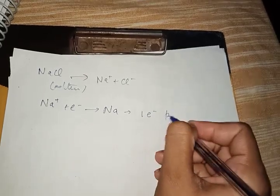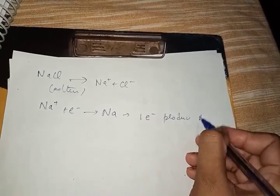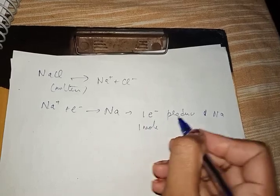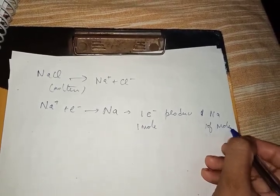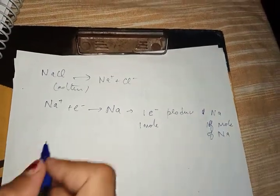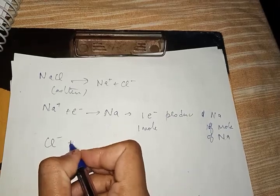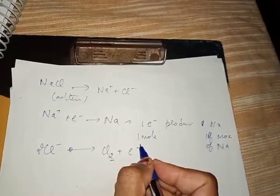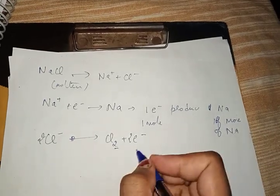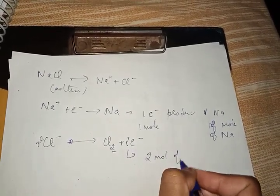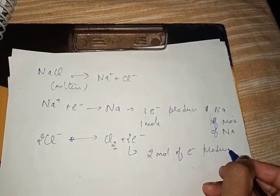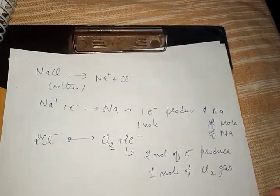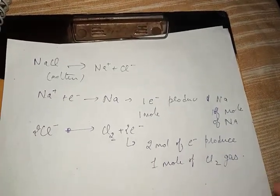One electron will produce one sodium atom. So one mole of electrons will produce one mole of sodium. For Cl negative: Cl negative gives Cl₂ gas and one electron. Since two atoms combine to form Cl₂ gas, two electrons are liberated. Therefore, 2 moles of electrons produce one mole of Cl₂ gas.